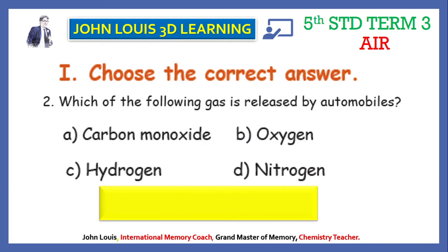Second question: which of the following gas is released by automobiles? A is carbon monoxide, B is oxygen, C is hydrogen, D is hydrogen. You would have seen black smoke coming out from the exhaust pipe of a bike, car, or any vehicle. That black smoke is nothing but carbon monoxide. Therefore the answer is A — carbon monoxide.